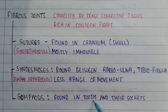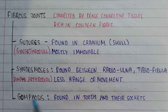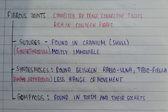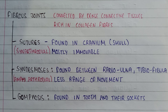Third is gomphosis. This type of fibrous joint is found in teeth and their sockets — the tooth fits into the socket with the help of the gomphosis joint. That is all about fibrous joints. You can take a screenshot to remember all these types of fibrous joints.